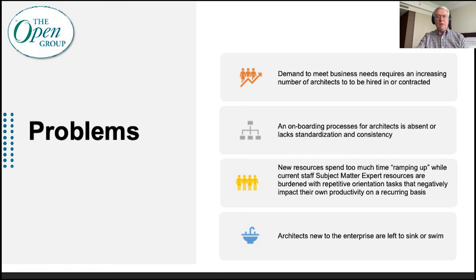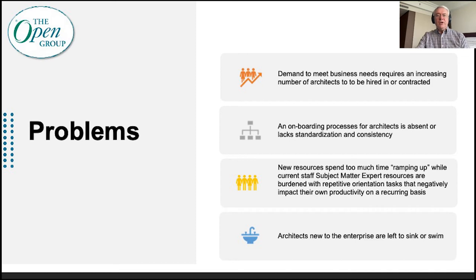So what problems are being solved for? We have a demand to meet business needs that requires an increasing number of architects to be hired or contracted. We have an absent or lack of standardization and consistency in onboarding for architects. We have resources currently in the architects pool spending too much time ramping up people who are being hired or contracted in, experiencing a negative impact on their own productivity. When you put these things together, you can get into a situation where architects new to the enterprise are left to sink or swim. You can't assume the market is going to supply against the architecture demand — for some time it has not been able to, and that includes contract services.